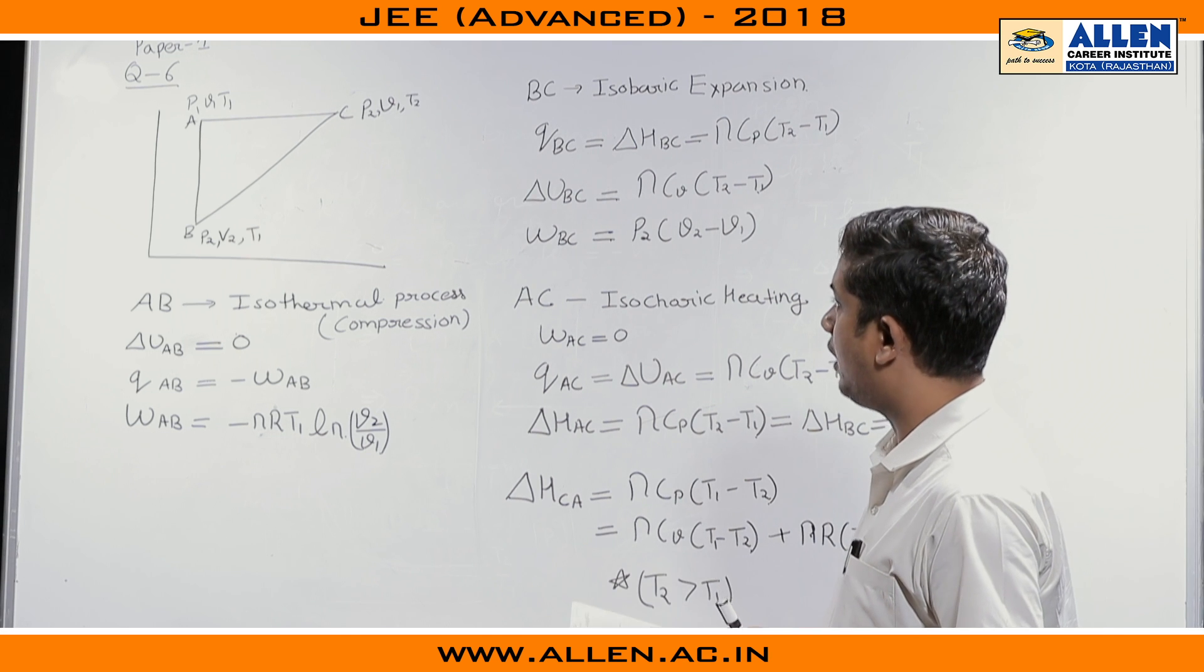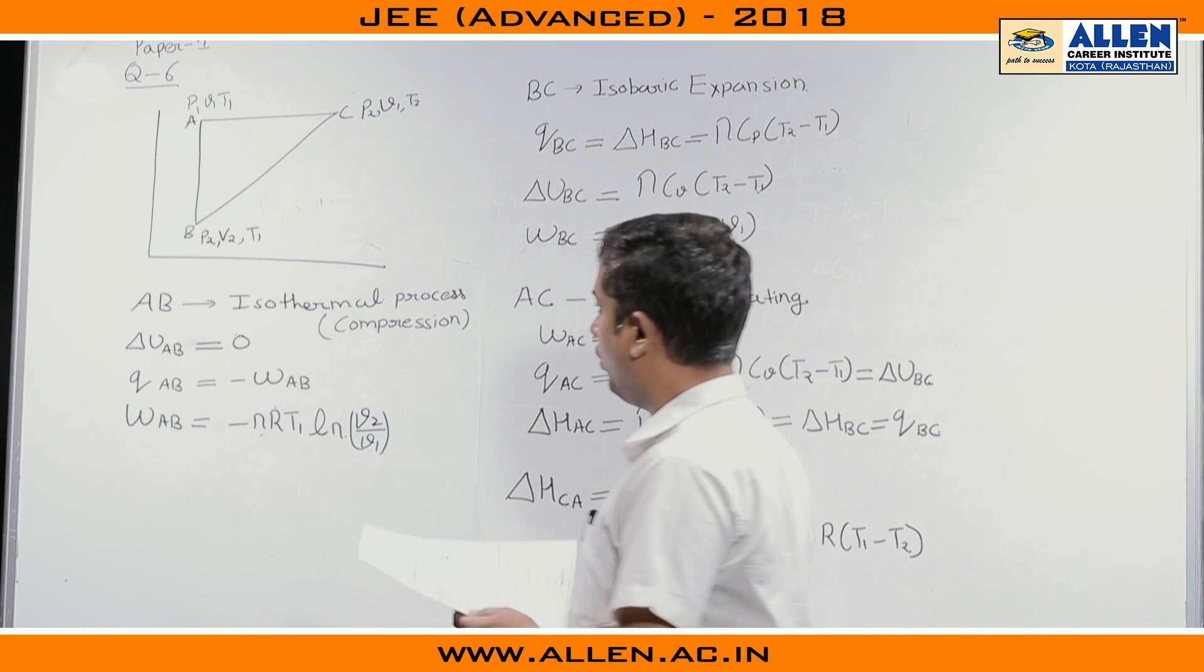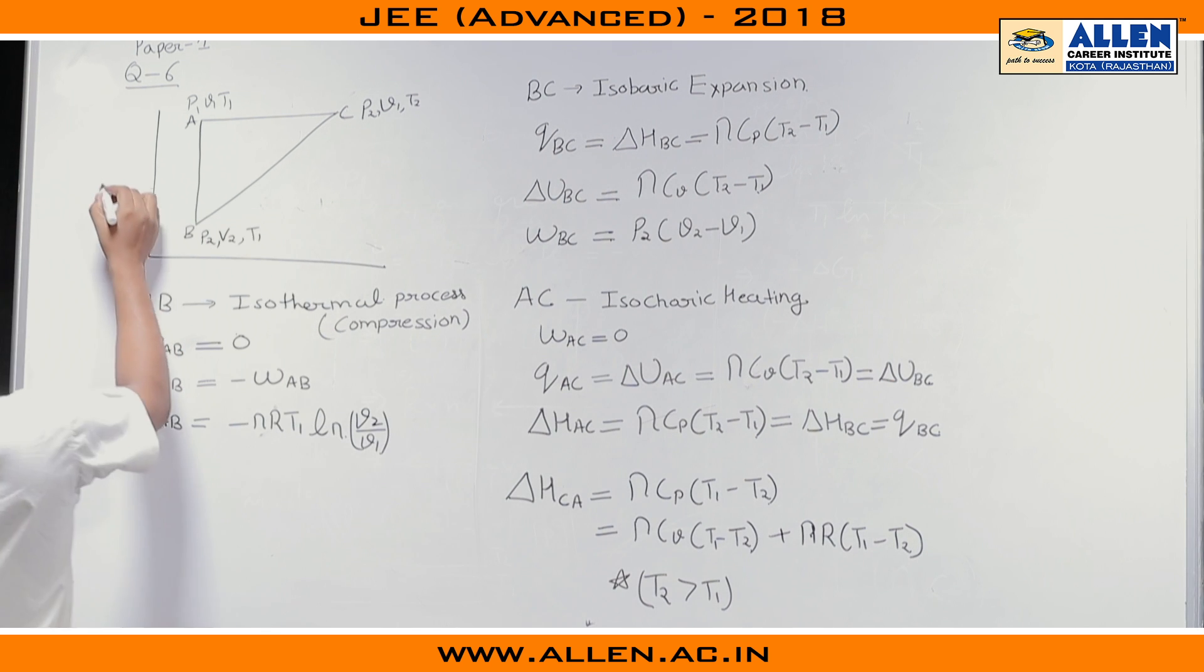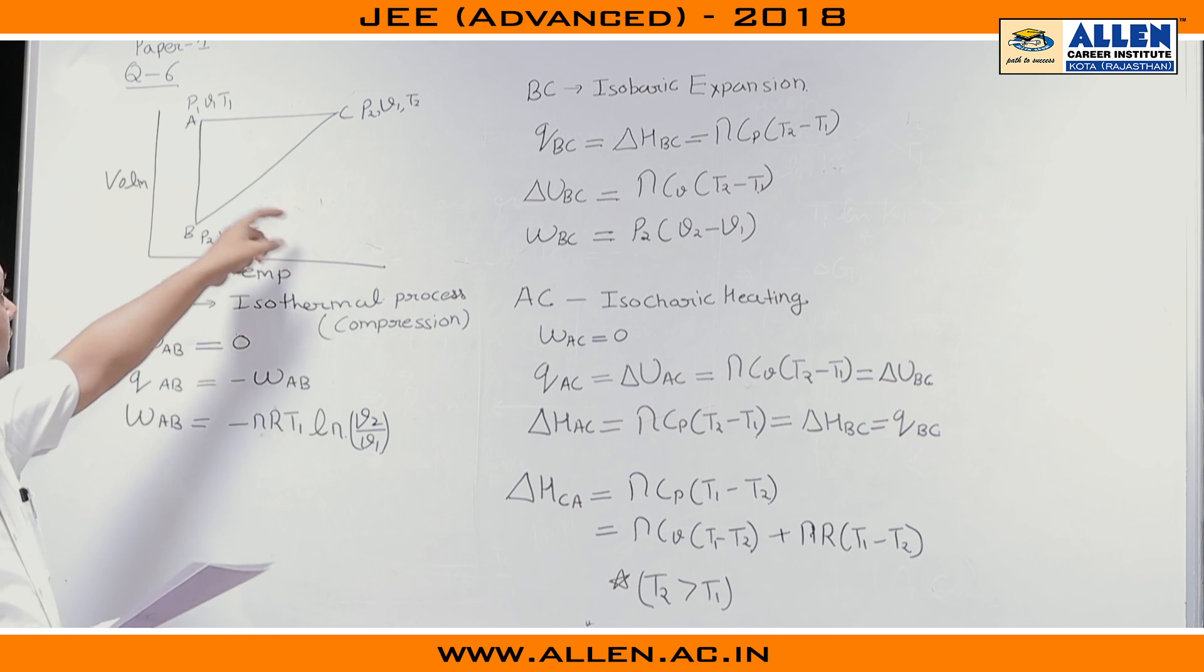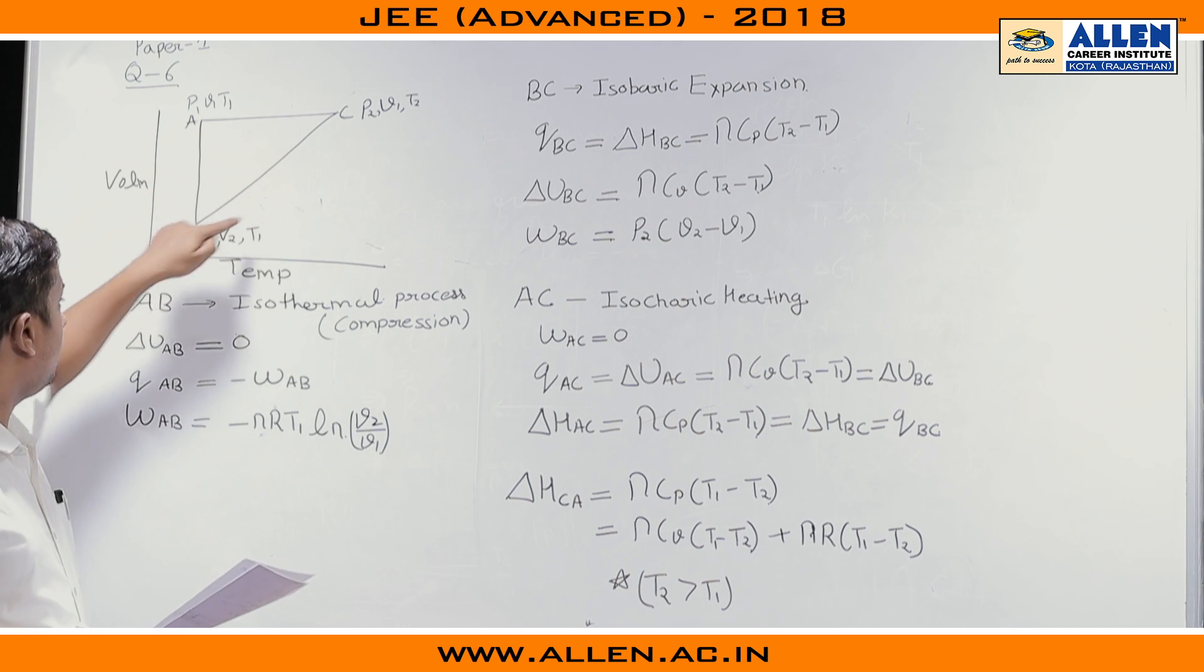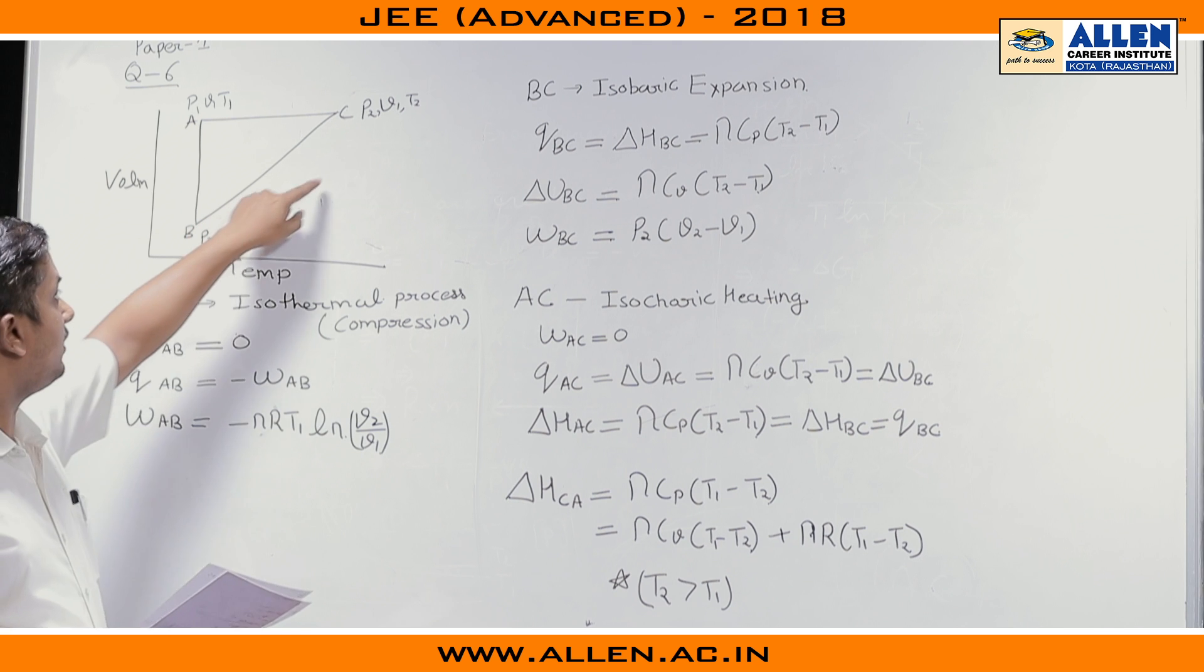In question number 6, the graph was given for volume versus temperature. This volume versus temperature graph is given to us and the points A, B and C are given. Pressure, volume and temperature at all the points are given.